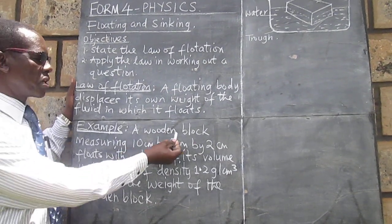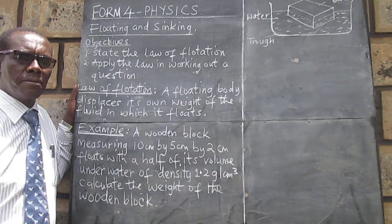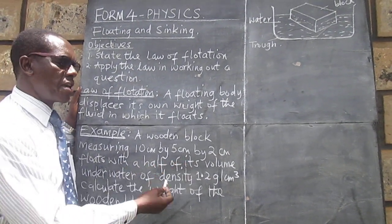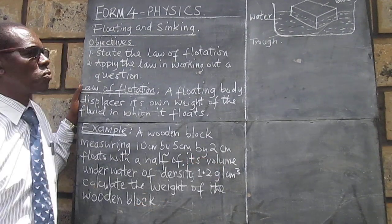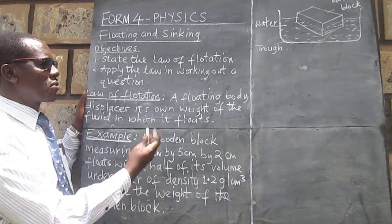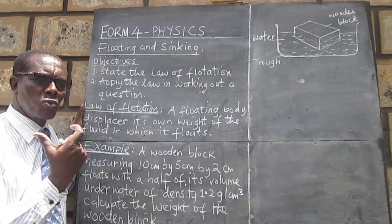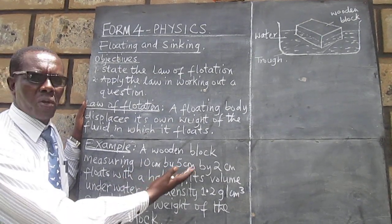We are given a wooden block, and the measurements of the wooden block are given. The length is 10, the width is 5, and the thickness of that wooden block is 2 cm. On the other part of the board, I've done a little sketch to give us a visual image of the kind of block we are thinking about.